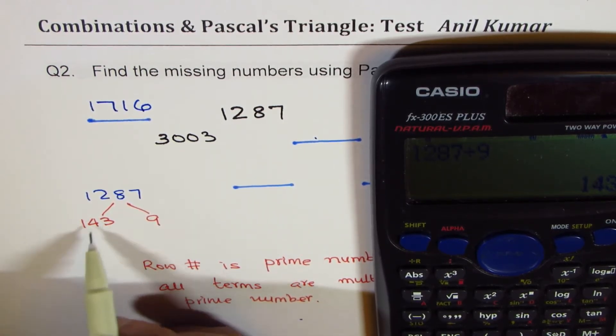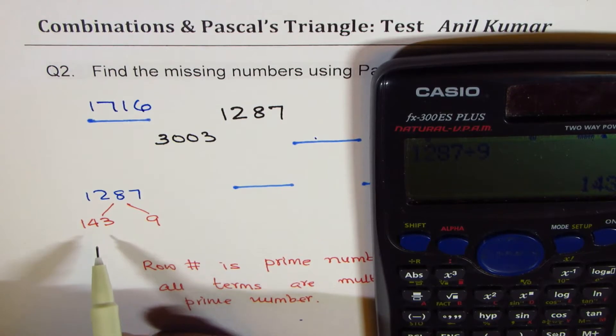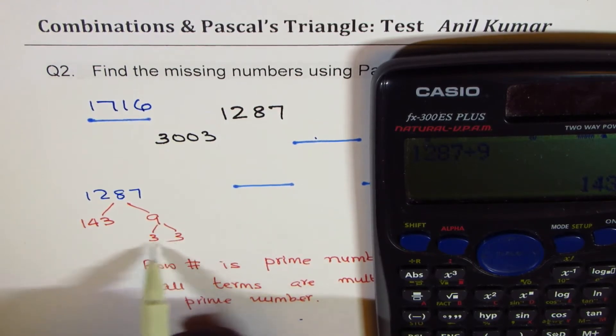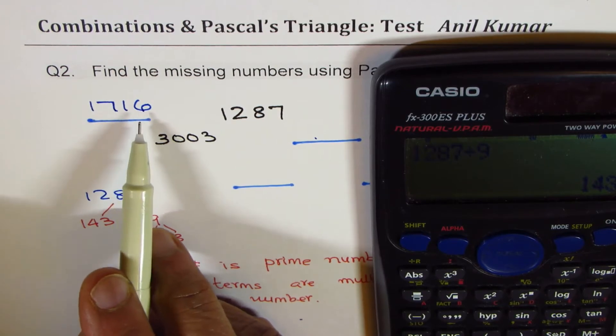Now 143. So could we factor 143? We are looking for prime factors. So 143, of course we have 3 and 3 here. But with 3 we cannot get that big numbers.